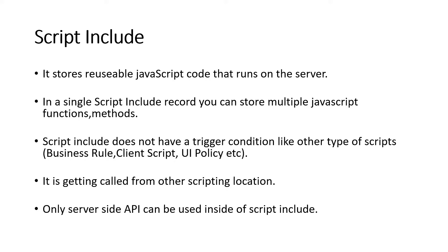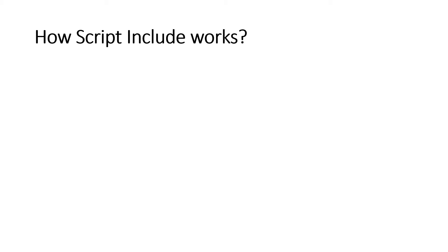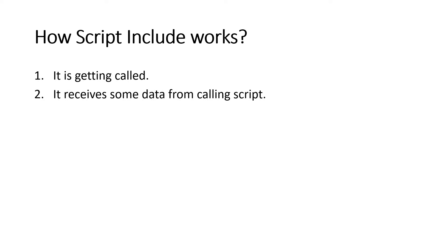Now let's look at how Script Include actually works. First, it gets called — it never triggers automatically. When called, it receives some data from the calling script as parameters. You define a function in the Script Include with parameters, do some GlideRecord operations or other logic, and return a value. The calling script passes the parameter values, and Script Include receives them.